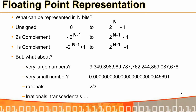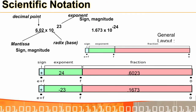The IEEE 754 standard works as follows. Take Avogadro's number 6.02 × 10²³. To represent it we need a sign, a magnitude, a mantissa, a decimal point, an exponent, and a base. For example, 6.023 × 10²³ can be written as 0.6023 × 10²⁴ with a plus sign.